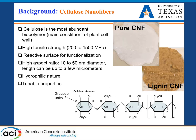A little bit about cellulose nanofibers: cellulose is the most abundant biopolymer and the primary constituent of plant cell walls. The properties of cellulose nanofibers depend significantly on the manufacturing process and the source. We can achieve very high tensile strength, somewhere from 200 to 1500 megapascal, but again that depends on the manufacturing process.